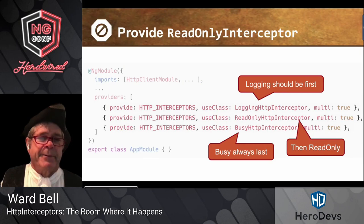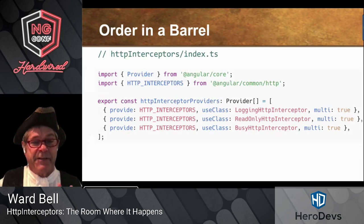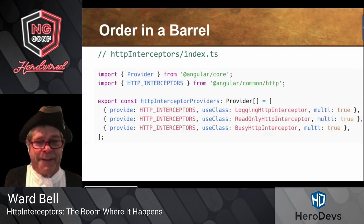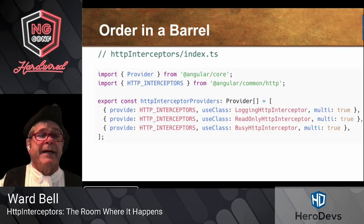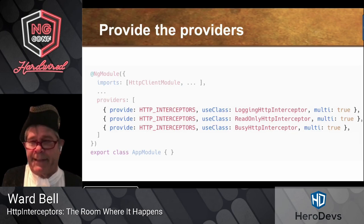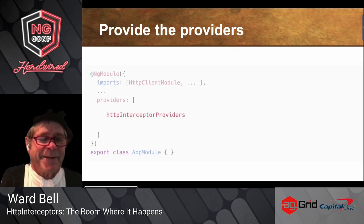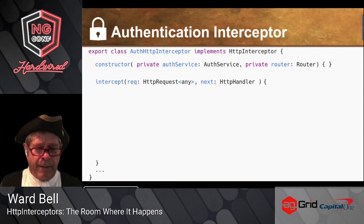The best approach is not to sprinkle interceptors around in a bunch of modules, but to pull them together so you can control the order. I do that in a barrel: I create a provider array called interceptorProviders, where I have the exact same thing I would have done in a module, ordered exactly the way I want. Then in AppModule I replace all the individual entries with my httpInterceptorProviders. As I evolve my interceptors, I'm not revisiting AppModule — which is a good thing.